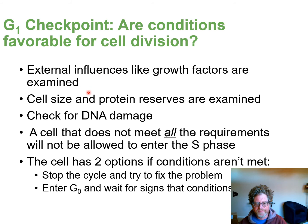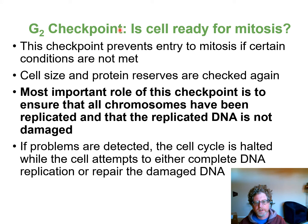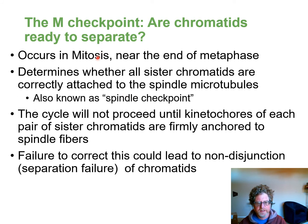The G1 checkpoint looks for growth factors, cell size, protein reserves, and DNA damage. If those requirements aren't met, the cycle stops and tries to fix the problem or waits for better conditions. The G2 checkpoint checks cell size, protein reserves, and proper chromosome duplication — if not met, it waits for DNA replication to complete or tries to repair damaged DNA. The mitosis checkpoint verifies that chromatids are ready to separate and that spindle fibers are properly attached to the centromere. Failure here could cause chromatids to not separate correctly.